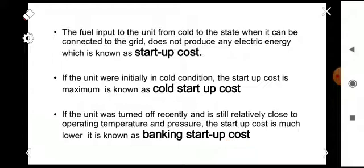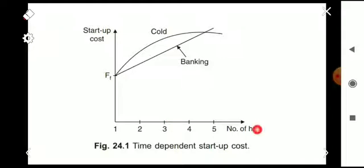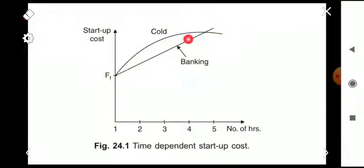If a unit was in operation and turned off recently, the machine temperature will be near the rated temperature and pressure, so the startup cost is much lower — this is called the banking startup cost. From the figure showing a curve between number of hours and startup cost, the cold start cost and the banking startup cost are compared. For a particular number of hours, the banking startup cost is very much less than the cold startup cost. That concludes the thermal unit constraint.